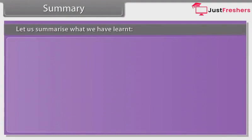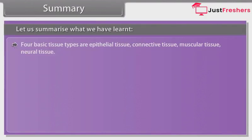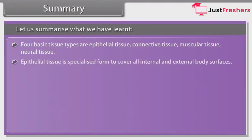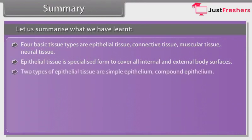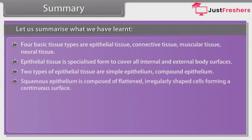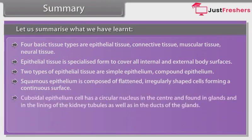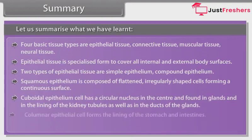Summary: Four basic tissue types are epithelial tissue, connective tissue, muscular tissue, and neural tissue. Epithelial tissue is specialized to cover all internal and external body surfaces. The two types of epithelial tissue are simple epithelium and compound epithelium. Squamous epithelium is composed of flattened, irregularly shaped cells forming a continuous surface. Cuboidal epithelium cells have a circular nucleus in the center and are found in glands and the lining of kidney tubules and ducts of glands. Columnar epithelial cells form the lining of the stomach and intestines.